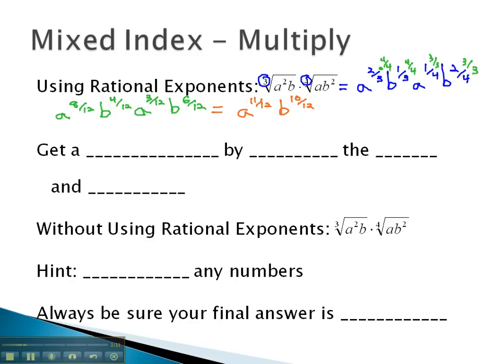And then finally, we could notice that we have the same denominator on both, which could be interpreted as the 12th index on a to the 11th, b to the 10th.